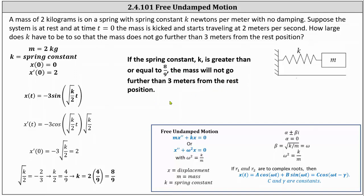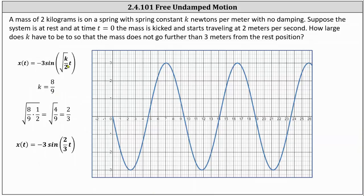Before we go, let's look at this graphically. If we substitute eight ninths for k into x of t, the square root simplifies to two thirds, giving us x of t equals negative three sine of two thirds t, which is graphed here on the right. Notice how the graph verifies that when the spring constant is eight ninths, the mass travels exactly three meters from the rest position — first toward the wall and then away from the wall. And if the spring constant is greater than eight ninths, the mass would travel less than three meters from the rest position. I hope you found this helpful.